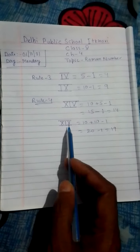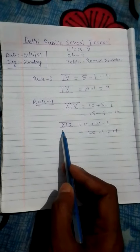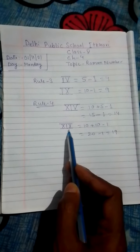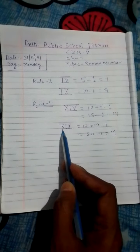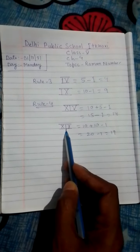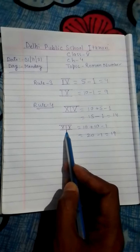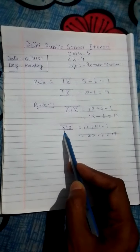Now one more example XIX. Now see this I is in between two bigger symbols of Roman. So this I should subtract.